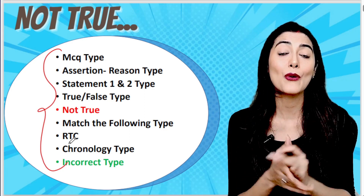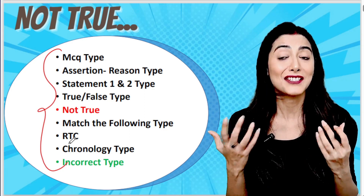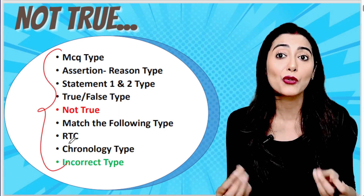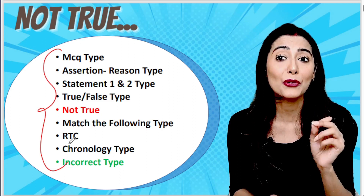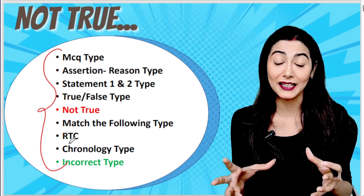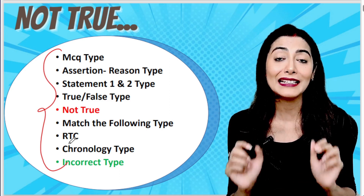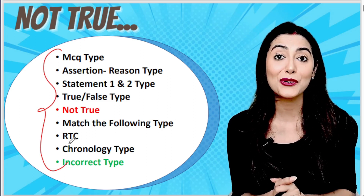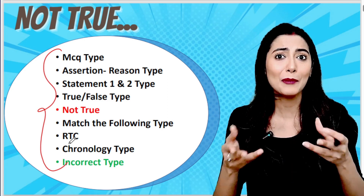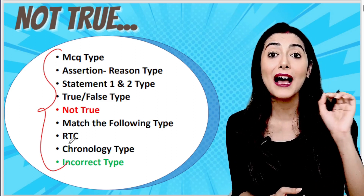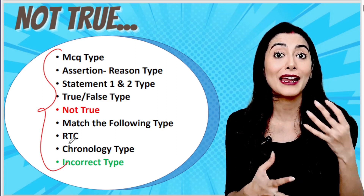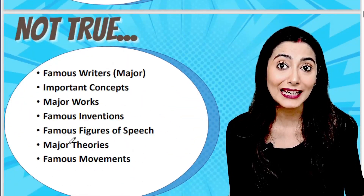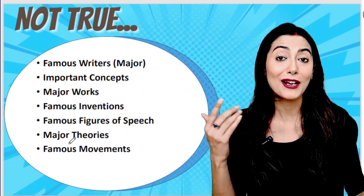On your screen, you can see all the question types asked in UGC Net: MCQ, Assertion-Reason, Statement 1 and Statement 2, True/False, Not True, Match the Following, RTC, Chronology, and Incorrect. The 'Not True' and 'Incorrect' types are highlighted. We are covering 'Not True' in this series, and 'Incorrect' type questions will be covered after this series.